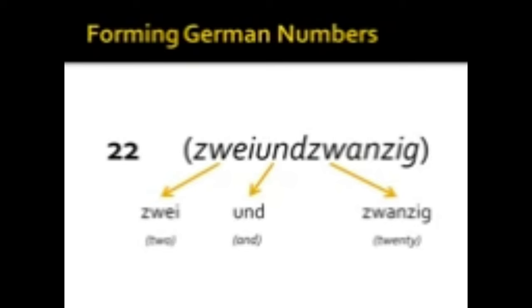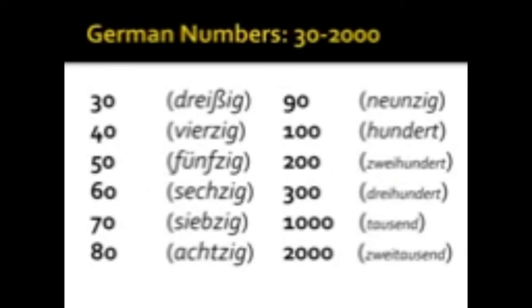With the exception, of course, of the numbers that are divisible by ten. So let's take a look at those for a second. Dreißig, vierzig, fünfzig, sechzig, siebzig, achtzig, neunzig, hundert.